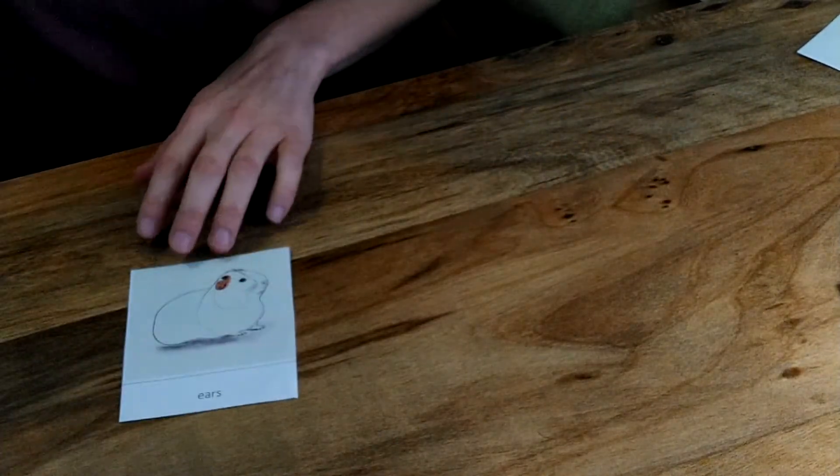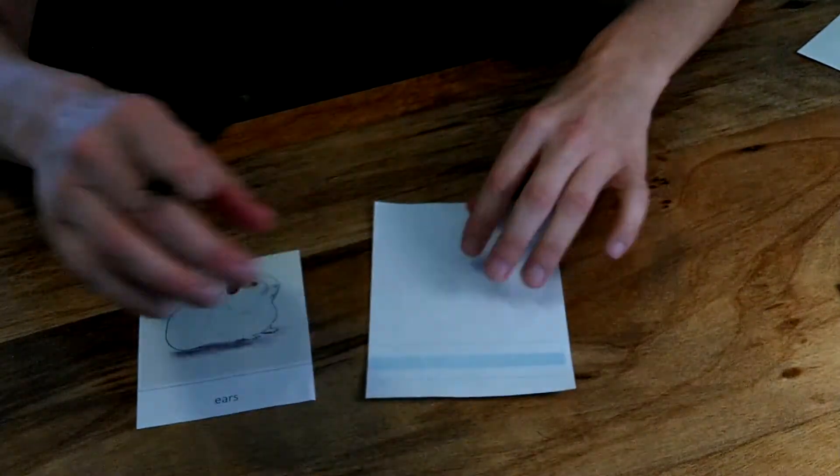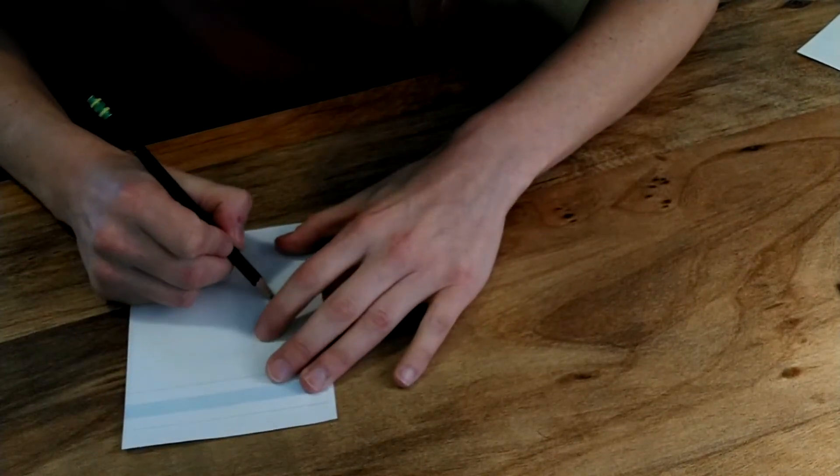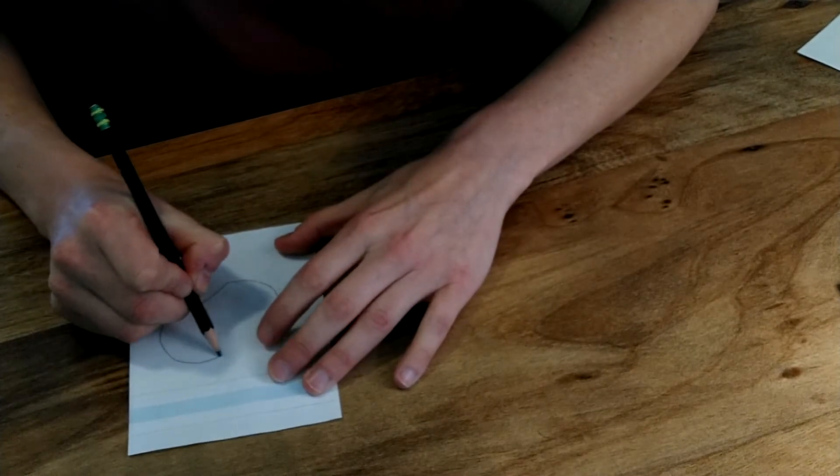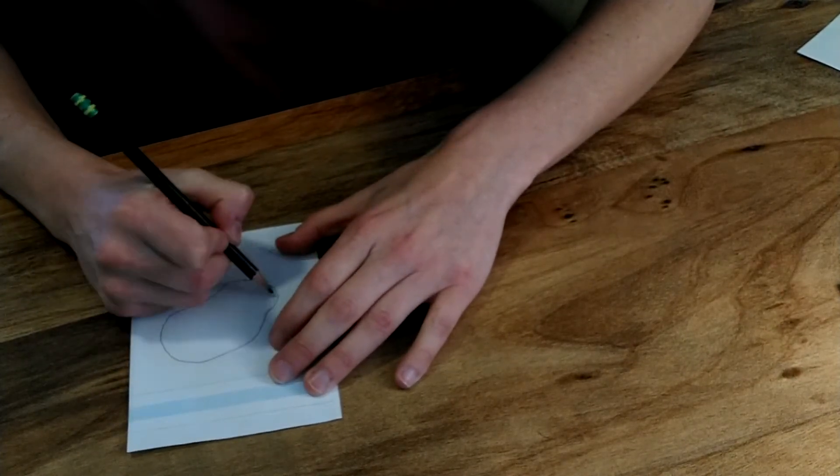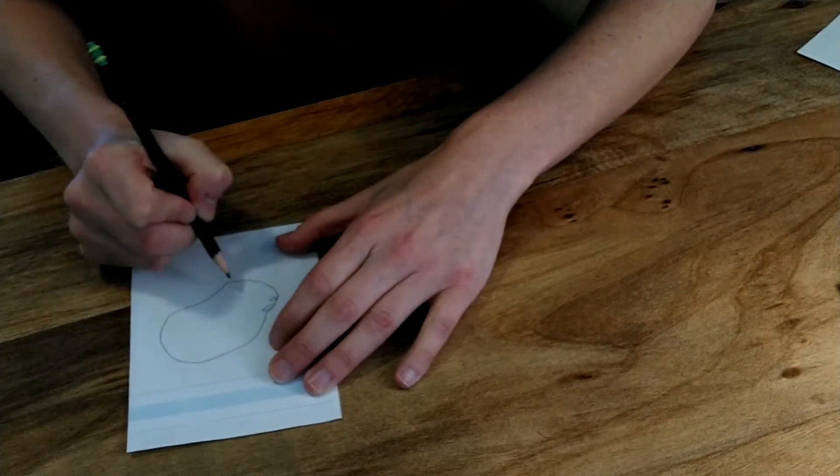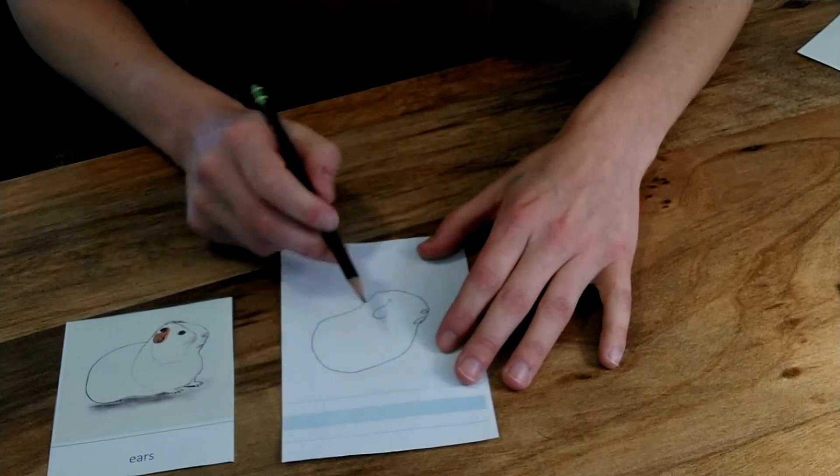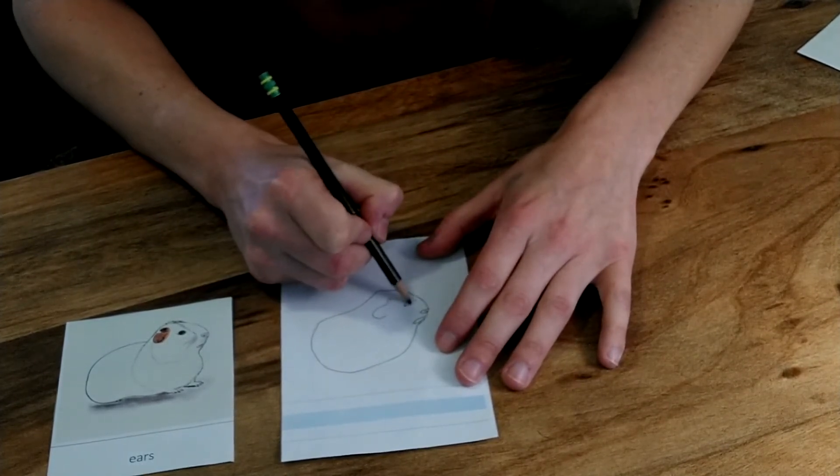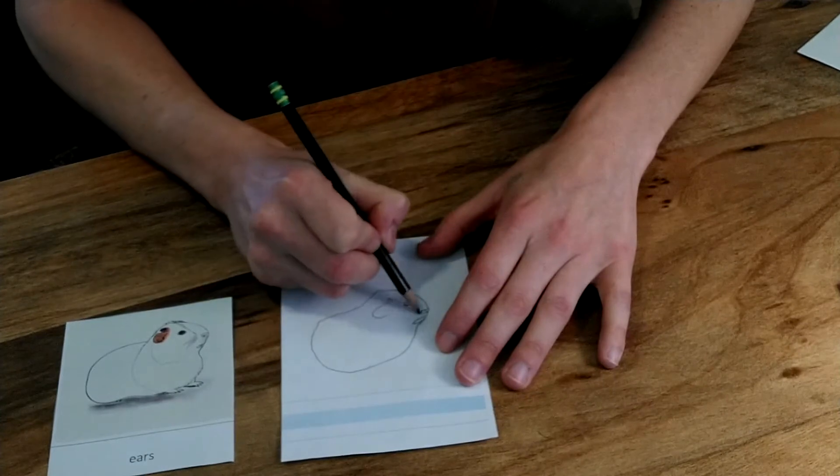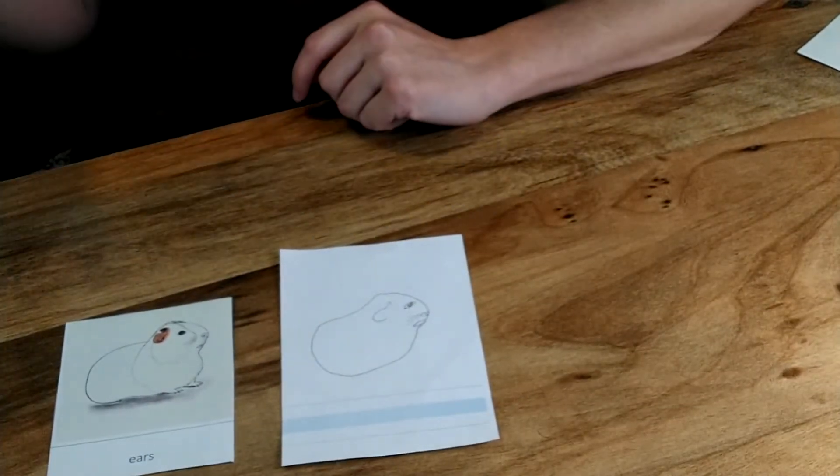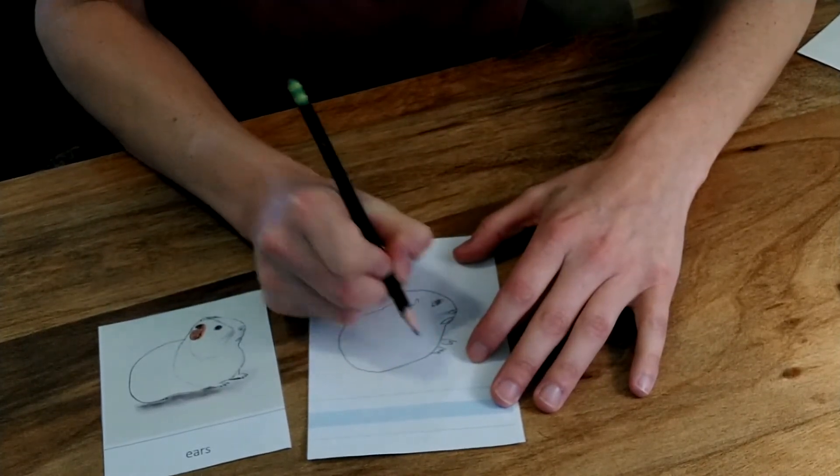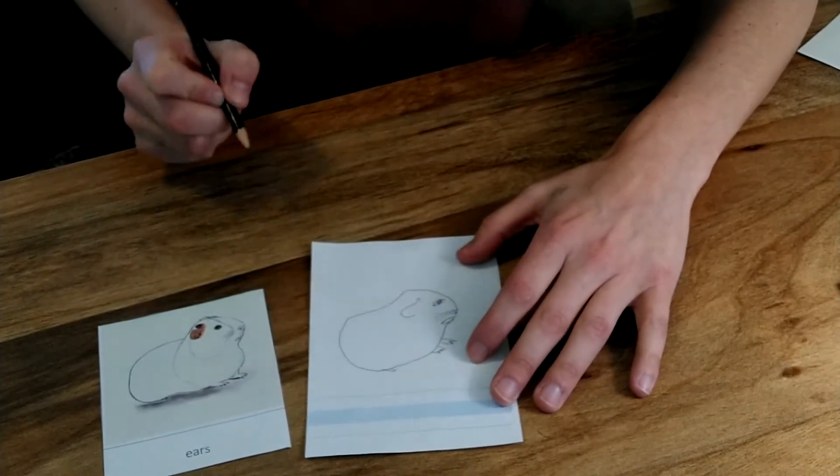Now I'm going to move on to the next, which is Ears. The ears are very important because the ears are what the animal uses to hear. So again, for the size of its head, the guinea pig has pretty big ears. That means that hearing is really important to it. It needs to be able to hear if something bigger is coming along because it's pretty small.